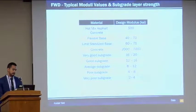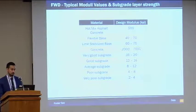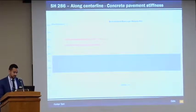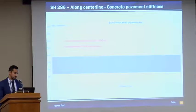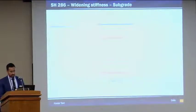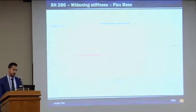Before we go over the falling weight data, I'd like to show some typical modulus values. The flex base ranges from 40 to 70 KSI, concrete ranges from 2,000 to 7,000 KSI, a very good subgrade ranges from 16 to 20, and a very poor subgrade ranges from 2 to 4. For State Highway 26, on the inside wheel pad with the concrete slab, the x-axis is the length of the project in miles, the y-axis is your modulus. The concrete slab is in pretty good shape — pretty uniform, 2,500 KSI average — but the widened section is a little different. The subgrade is pretty weak, in the 4 KSI range, and since the foundation is pretty weak, the flex base is pretty weak as well, with most of it below the 40 KSI range.